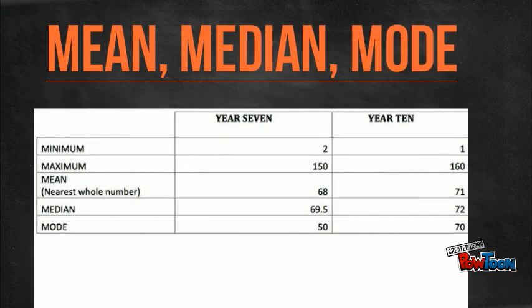This table shows Year 7s to have a lower mean, median and mode, and so depicts that Year 7s from this sample do have a lower resting pulse rate on average.